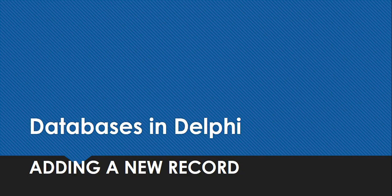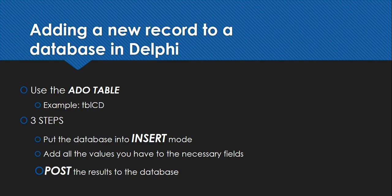In this video we're going to look at how we can change information in a database from the Delphi side via Delphi code — specifically how to add a new record to database tables. When you want to add a new record to a database there are three key steps. The first step is to put it in the correct mode. We use an ADO table called TBL_CD, which is connected to the CD table in our database, and we want to add a new CD to that table. The first key step is to put the database into insert mode.